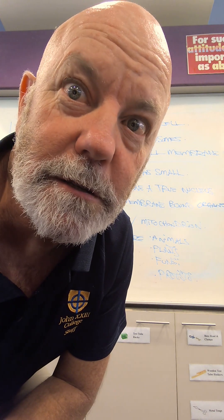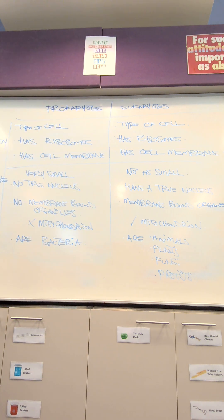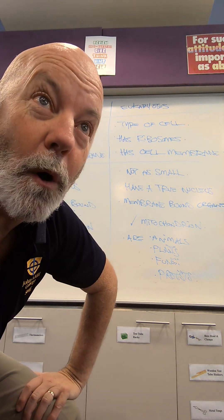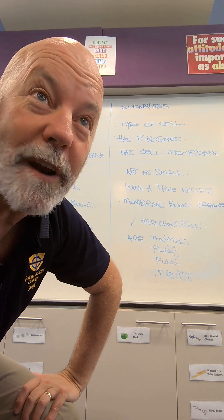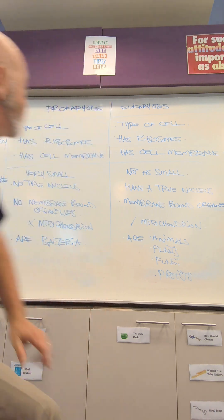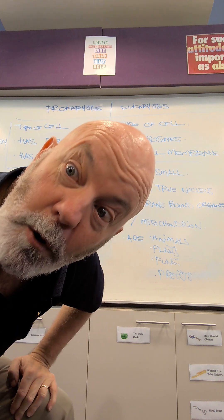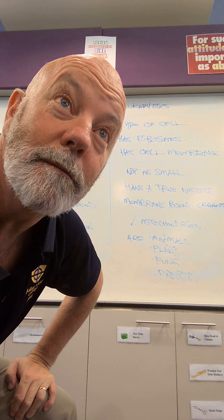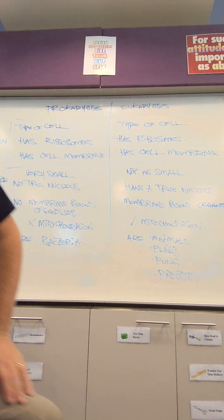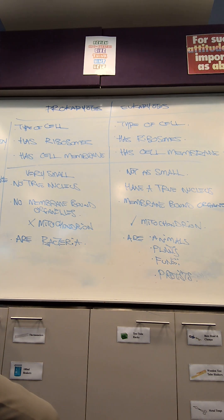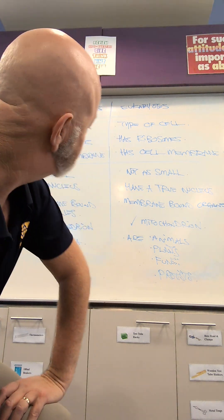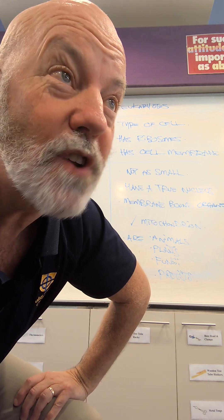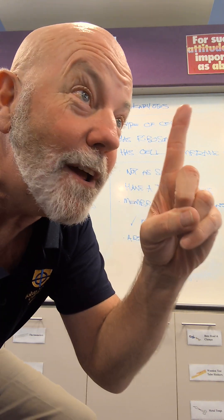But there are differences. Prokaryotes are very small, and eukaryotes are small, but not as small as prokaryotes. Because prokaryotes don't have a true nucleus. Eukaryotes do. Prokaryotes don't have membrane-bound organelles like mitochondria, but eukaryotes do.